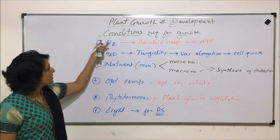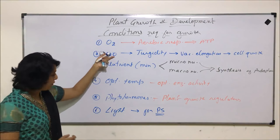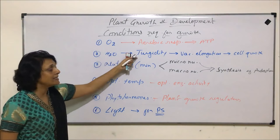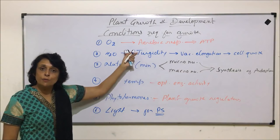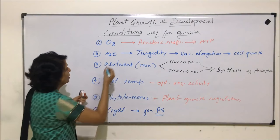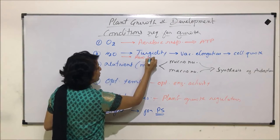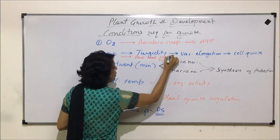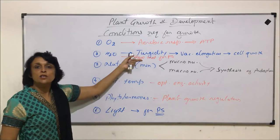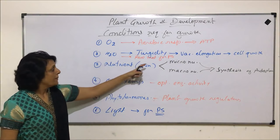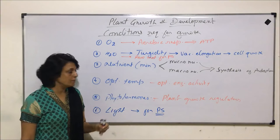To recap: oxygen is for ATP generation. Water — first, it is a raw material for photosynthesis, and second, it provides turgidity, so vacuolar elongation takes place and cell growth occurs. Water is also a raw material for photosynthesis, which is essential for plant growth. Nutrients — both micro and macro — help in protoplasm synthesis.